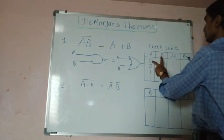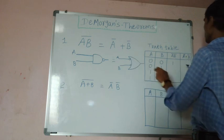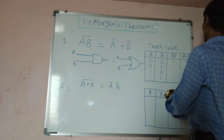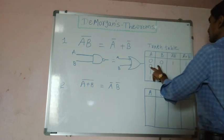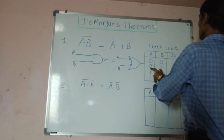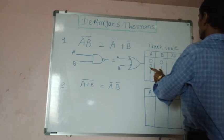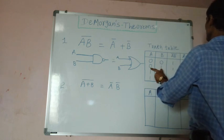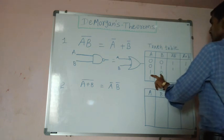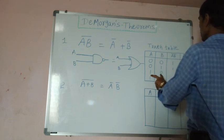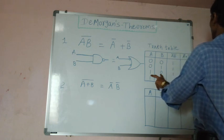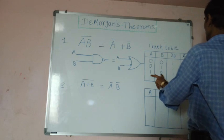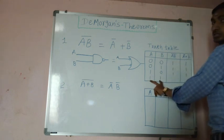So individual complements: A bar, B bar. For input 0,0: A bar is 1, B bar is 1, addition is 1. For input 0,1: A bar is 1, B bar is 0, product is 0, complement is 1. Addition of individual complements is 1. For input 1,0: A bar is 1, B bar is 0, product is 0, complement is 1.